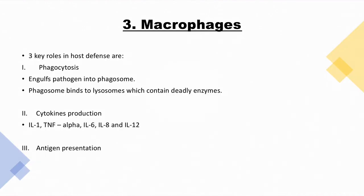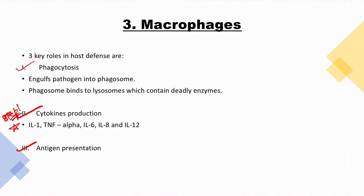Macrophages play three key roles: phagocytosis, cytokine production, and antigen presentation. Phagocytosis involves the macrophage engulfing a pathogen, storing it in a phagosome, which then binds to the lysosome containing deadly enzymes that kill the pathogen. Cytokine production is very high yield for Step exams — you need to know which cytokines are produced by macrophages.